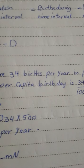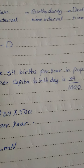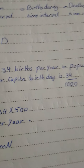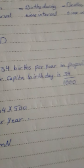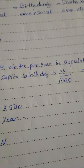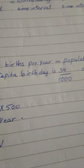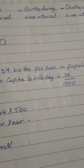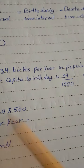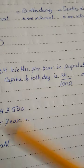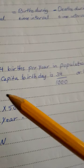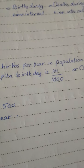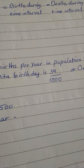We can convert this model into one in which births and deaths are expressed as the average number of births and deaths per individual during the time interval. The per capita birth rate is the number of offspring produced per unit time by an average member of the population. For example, if there are 34 births per year in a population of 1,000 individuals, the annual per capita birth rate is 34 / 1,000, or 0.034.